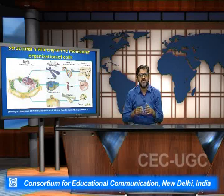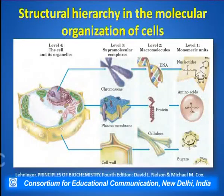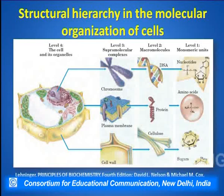If we see the diagrammatic representation, it represents the structural hierarchy in the molecular organization of the cell. Level 1 is composed of the nucleotides which majorly constitute adenine, guanine, thymine and cytosine. Then there are amino acids, and sugar molecules like ribose sugar, glucose sugar, and the various saccharides.